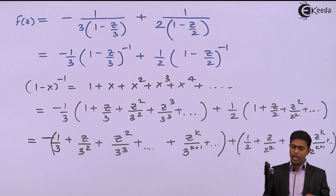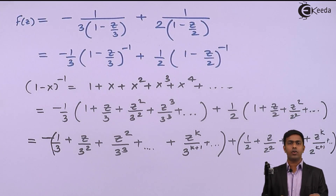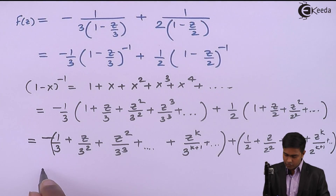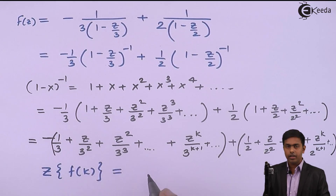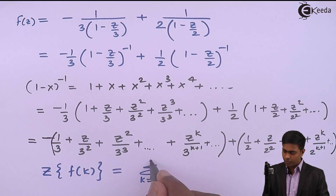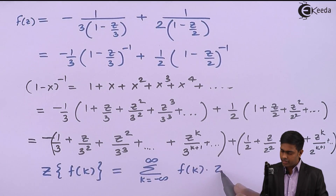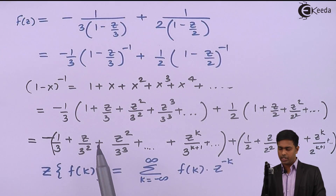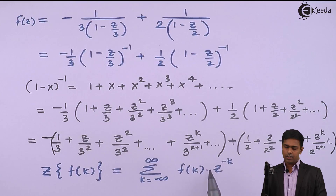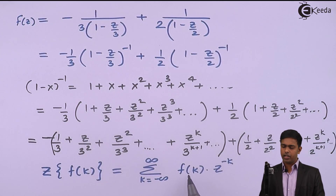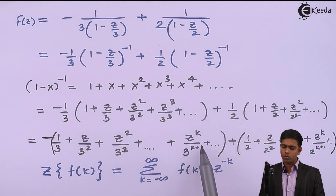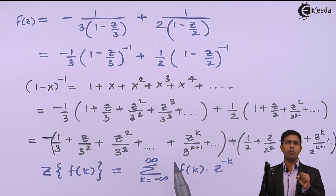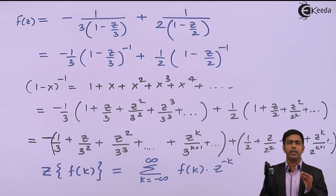Now, why are we considering these terms in the series? By the definition of the Z-transform, the Z-transform of a sequence f(k) is the sum from k = −∞ to ∞ of f(k) · z^(−k). So the inverse Z-transform asks us to find f(k), which is the coefficient of z^(−k) in the series. We need to identify the coefficient of z^(−k) in our expanded series.